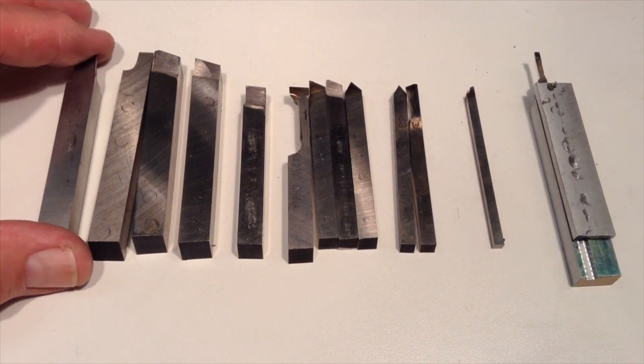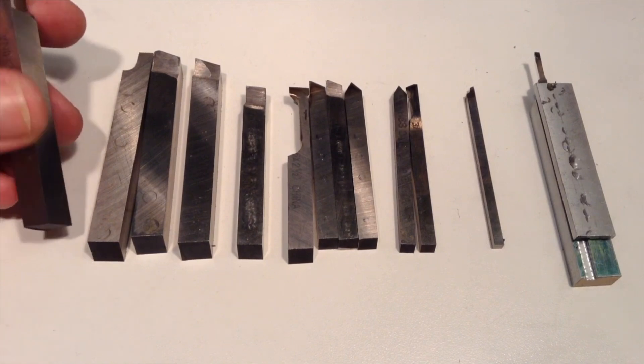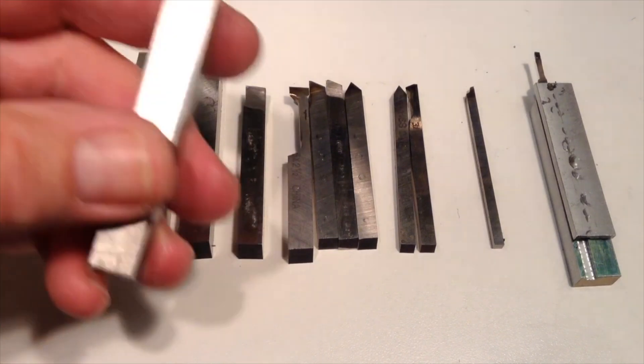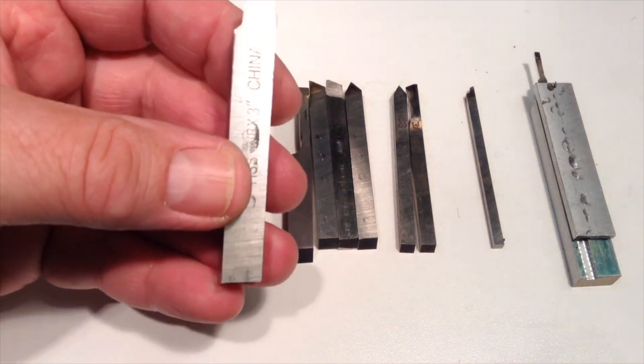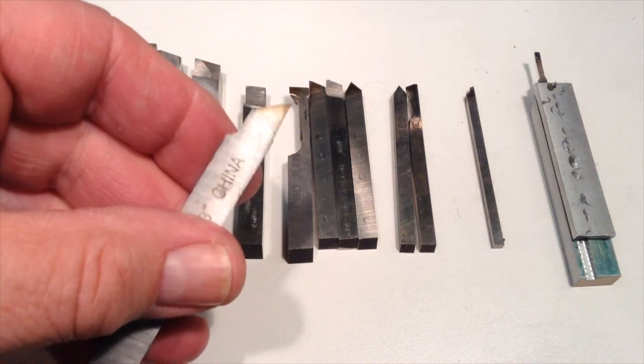Let's take a look now at some cutting tools for the mini lathe. This first set that I'm going to show you are made from high-speed steel, and these are ground on an ordinary bench grinder.